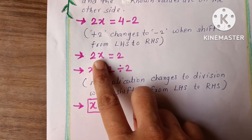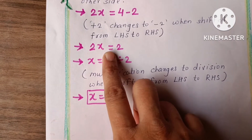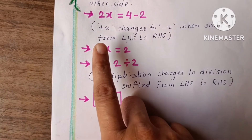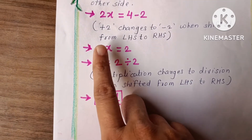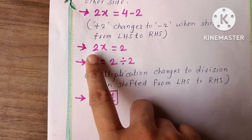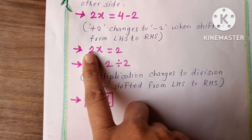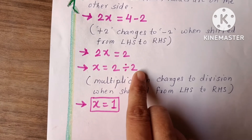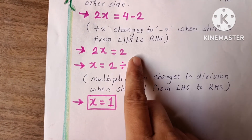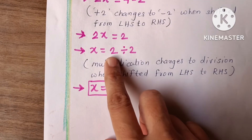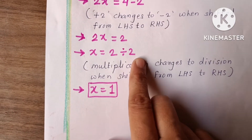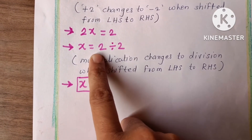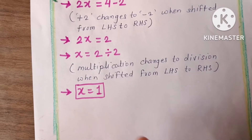Two x means two multiplied by x is equal to two. So here multiplication is there. If it is shifted to the other side, multiplication will convert into division. That's why here two is divided by two, because two shifted to the other side of the equation. So here it is two divided by two, and the answer is x is equal to one, because two divided by two equals one.